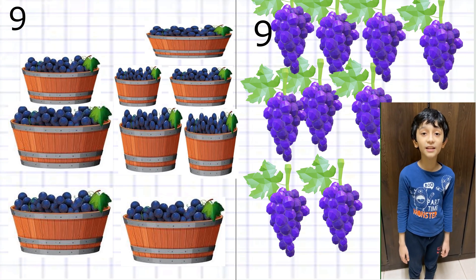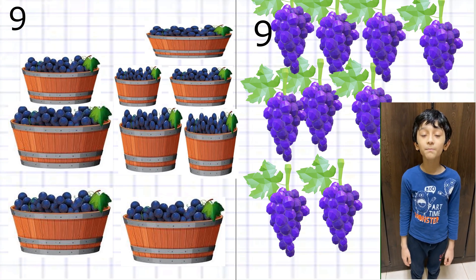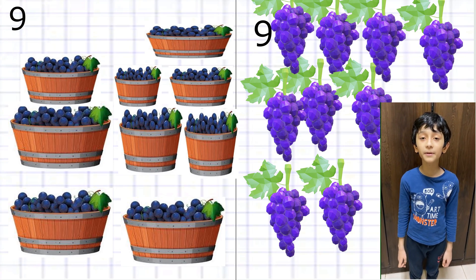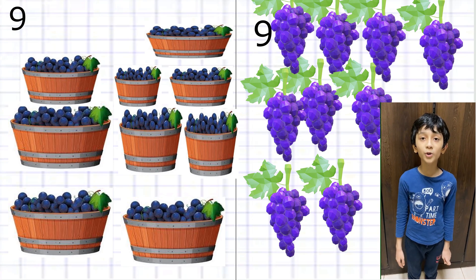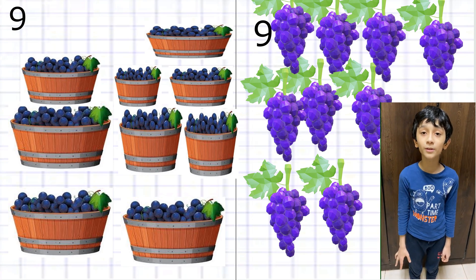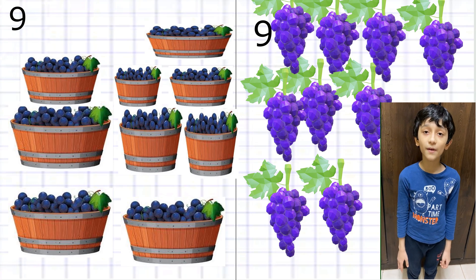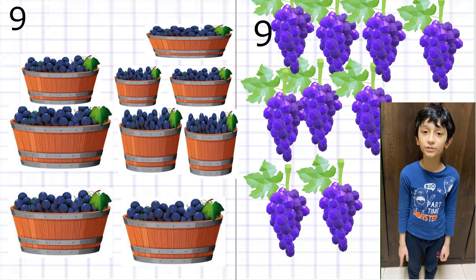Now we have collected nine buckets and nine grapes, but we have a problem again — if we put one more we need three digits. If we have collected one more, you write one in the first place and two zeros at the end, making 100.